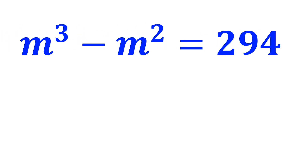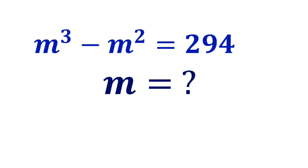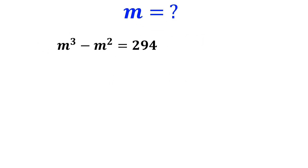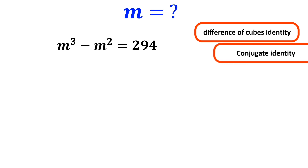If m cubed minus m squared is equal to 294, then what is the value of m? Let's solve it step by step together. To solve this equation, we need to start by rewriting it in a way that allows us to extract a difference of cubes identity and a conjugate identity.